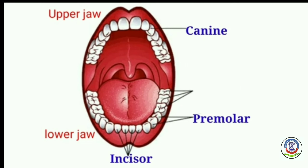The fourth type is molars. Molars are broad teeth used for chewing and grinding food. They are at the back of the mouth and are similar to but larger than premolars. There are twelve molars — six each in the upper and lower jaw.